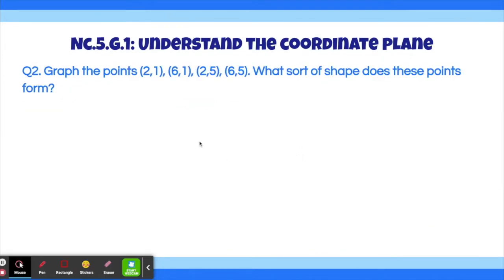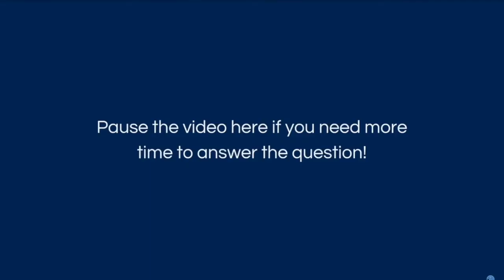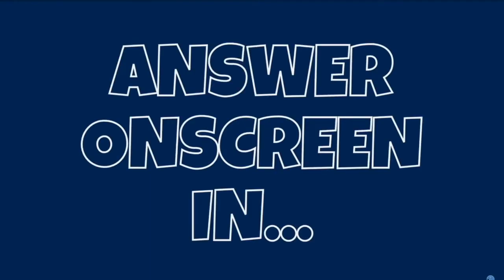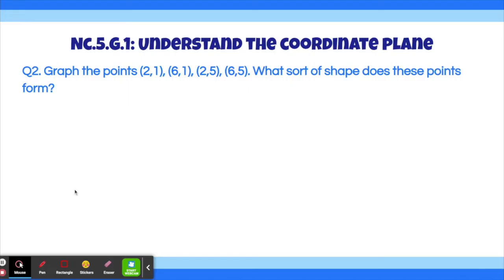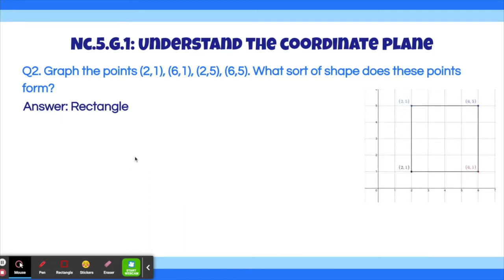Question 2. Graph the points (2, 1), (6, 1), (2, 5), and (6, 5). What sort of shape do these points form? The answer is a rectangle.